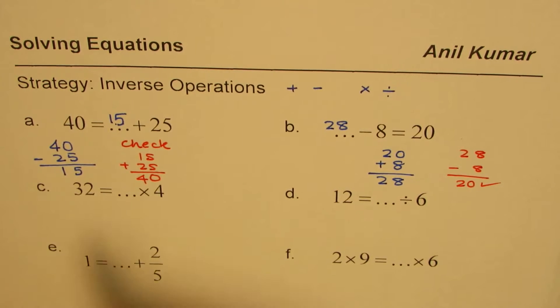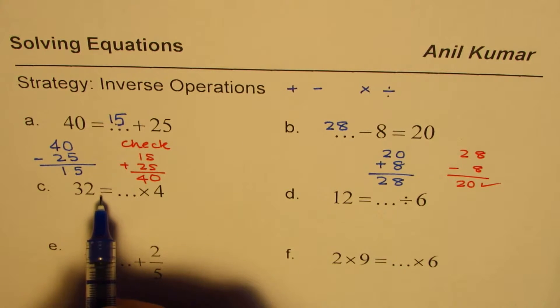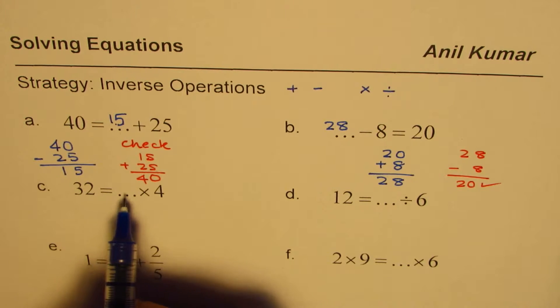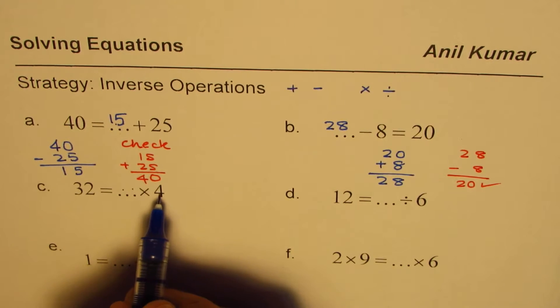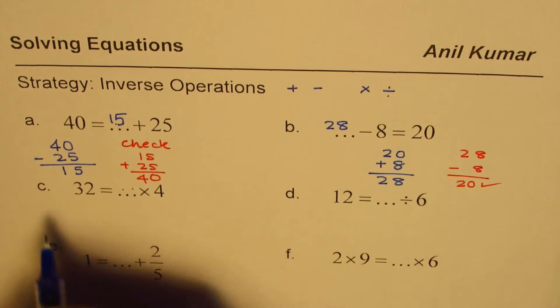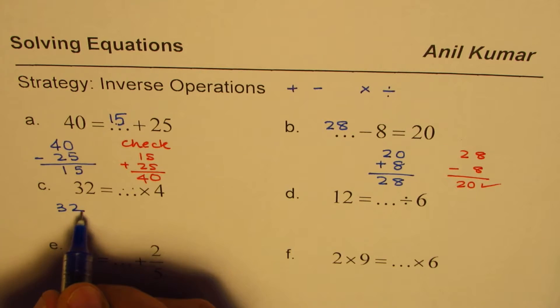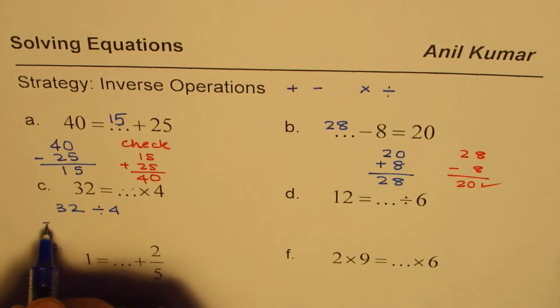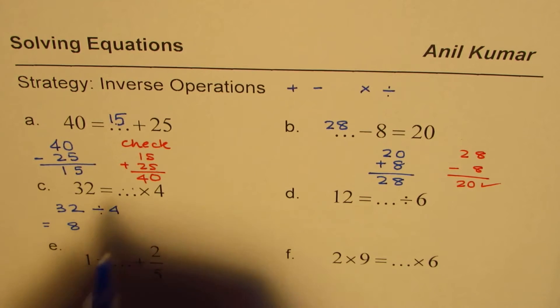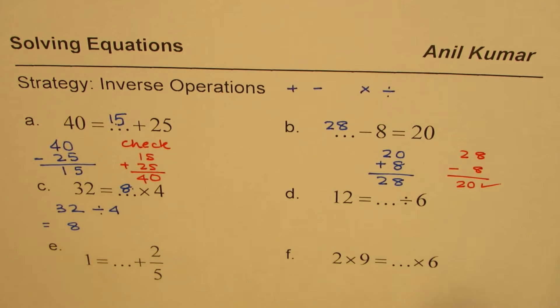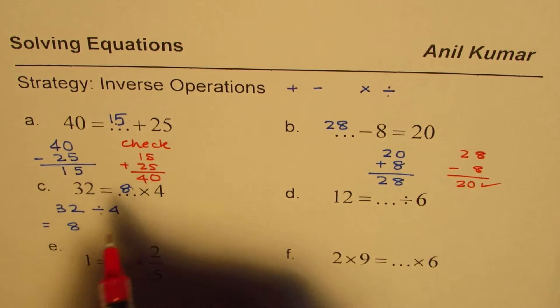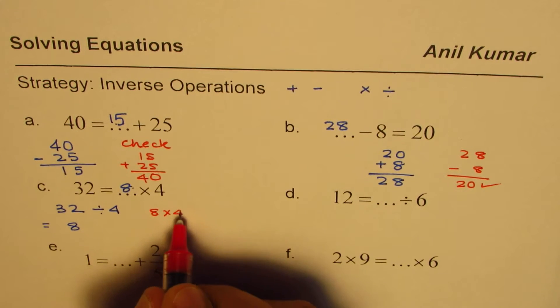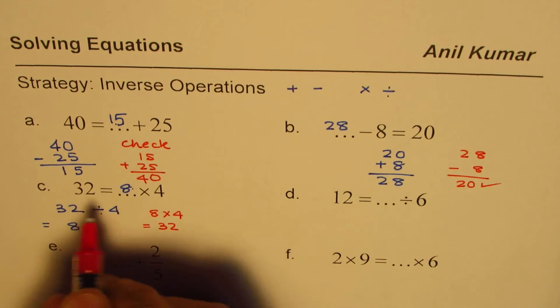Next one here is 32 equals to something times 4. What is that thing? We could divide by 4. Inverse of multiplication is division. So we will do 32 divided by 4. So when you divide 32 by 4 you get 8. So this number should be 8. We can try. What is 8 times 4 equals to? It is indeed 32. It works.